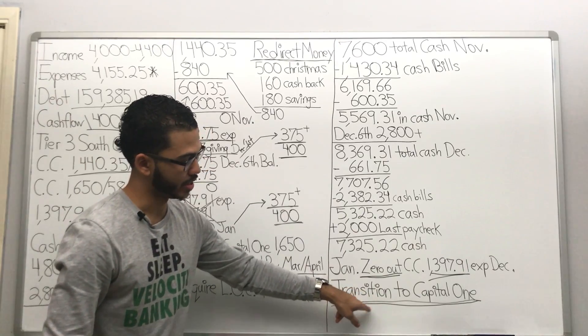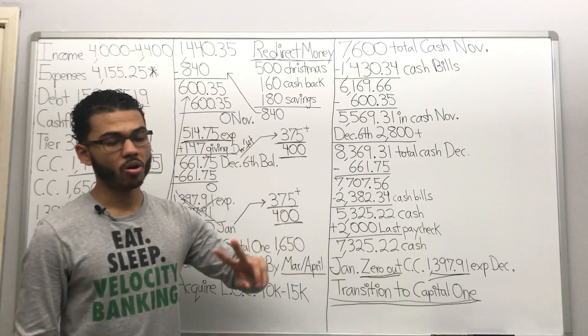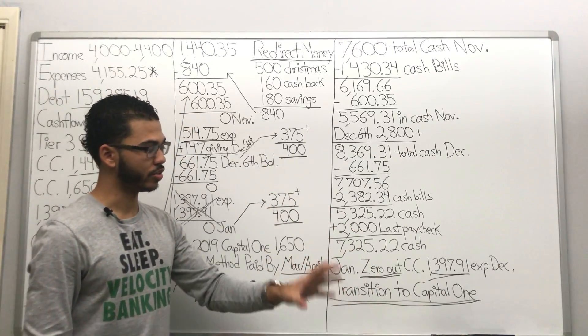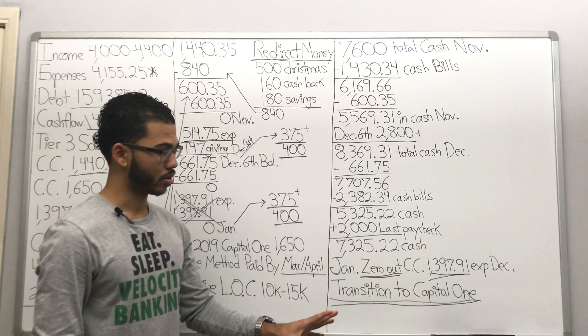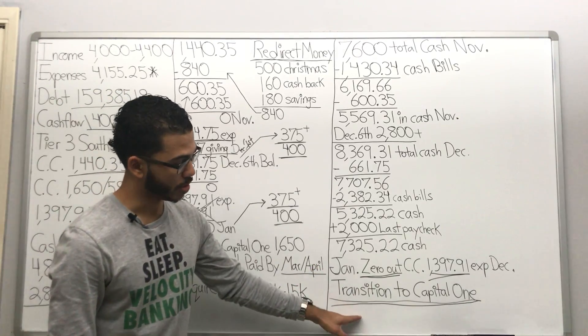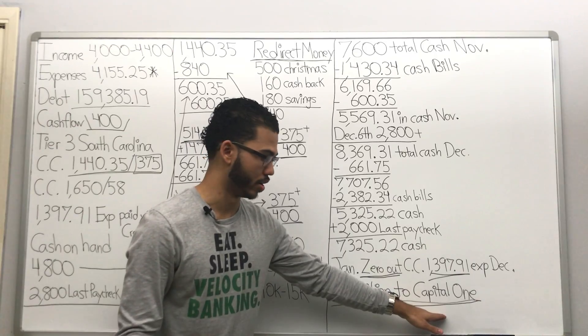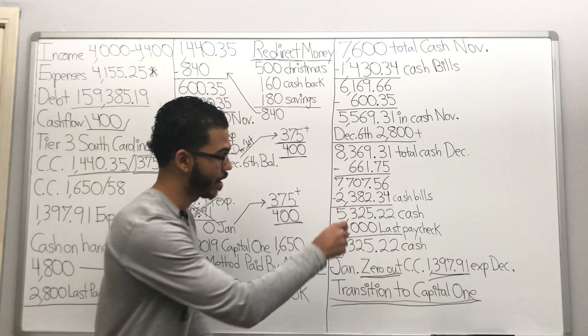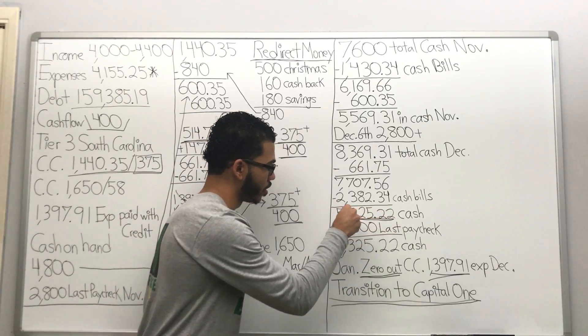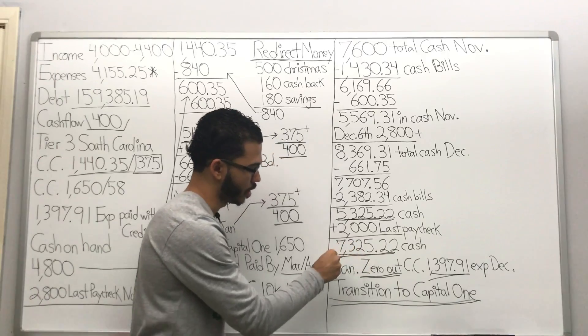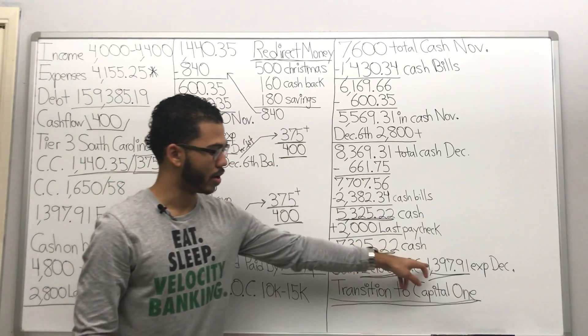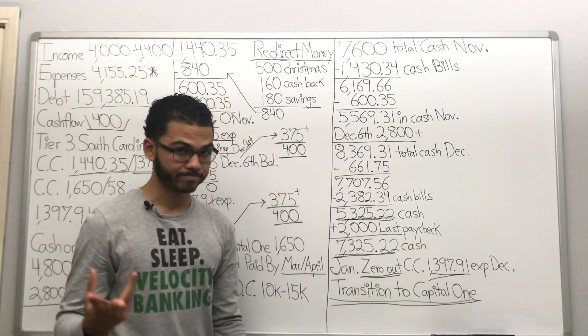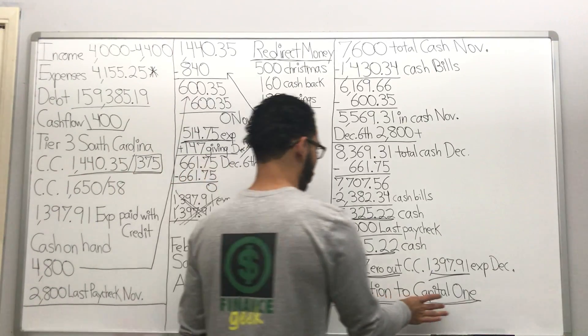Okay we're now in January. And we're gonna make a transition either in January or February. So for this lady I know she can conservatively do this by February, the earliest being January. We're gonna make a transition to Capital One to start doing velocity banking on that. And I have the money to do so. I've got the cash. That minus that, whatever's left over, plus she's gonna get two paychecks in January. So we can make the transition.